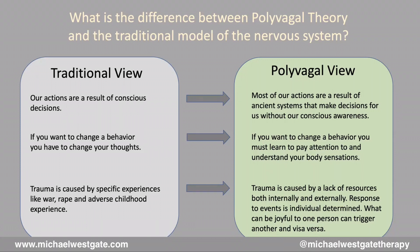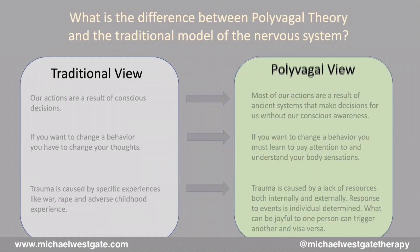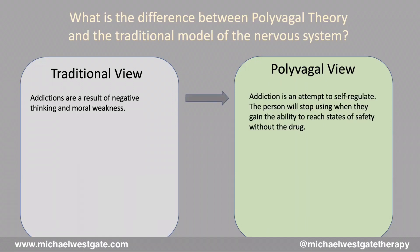What could be a total trauma to one person could be completely benign to someone else — something as simple as heights or going into an elevator. Some people have a phobia about elevators; I don't consider them dangerous, but someone else might. Similarly, the traditional view sees addictions as the result of negative thinking and moral weakness, whereas polyvagal sees addiction as an attempt to self-regulate — and that the person will stop using when they gain the resources to not need it.